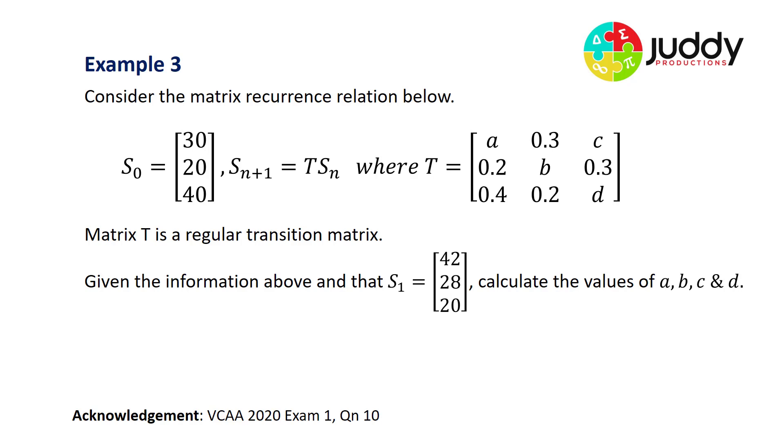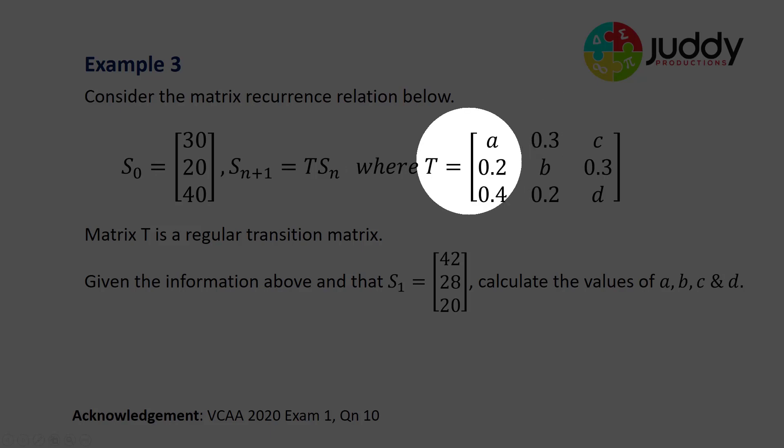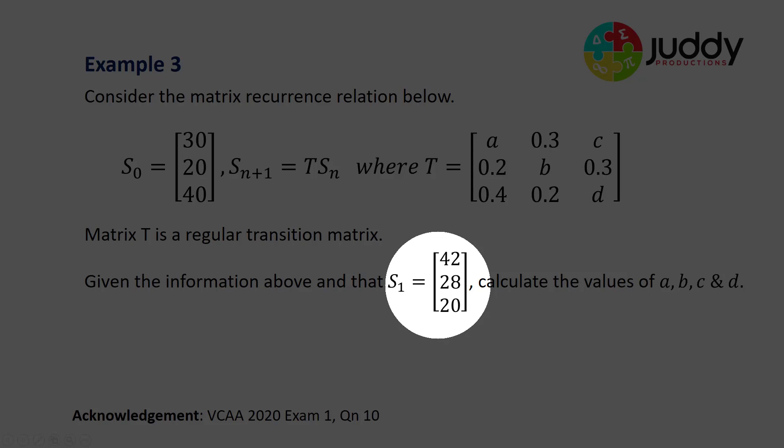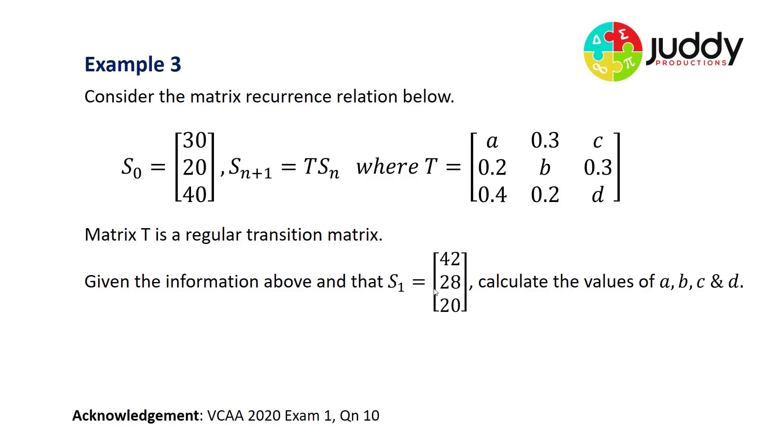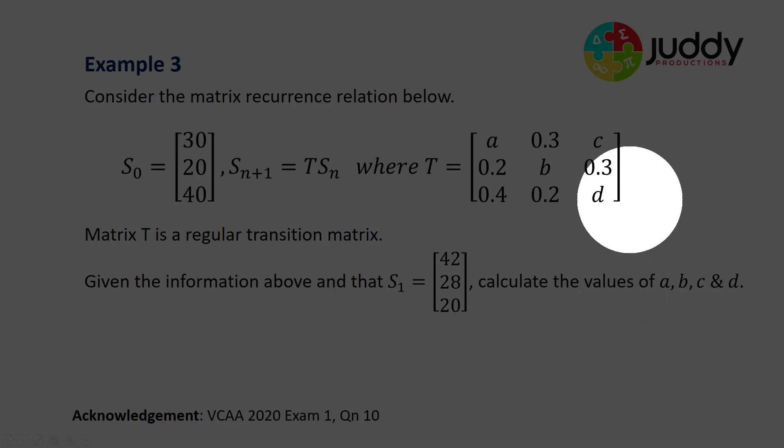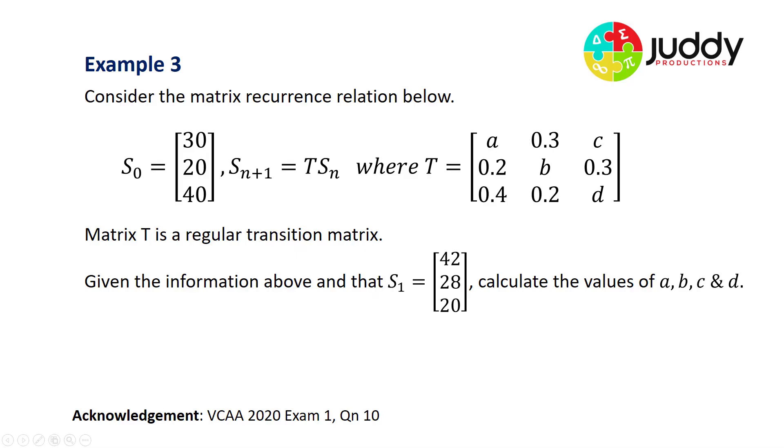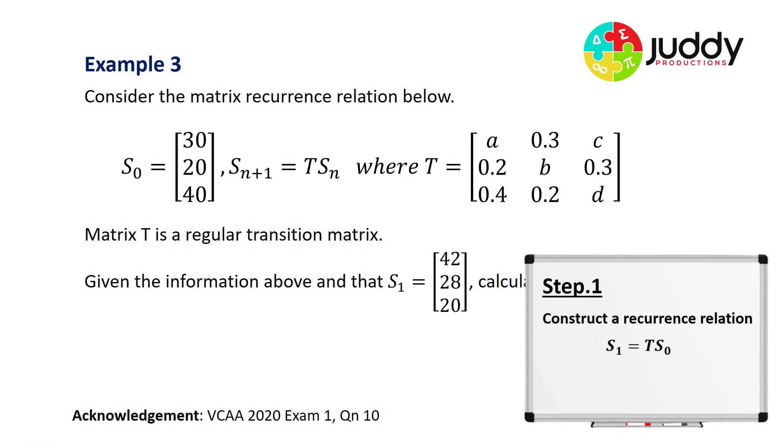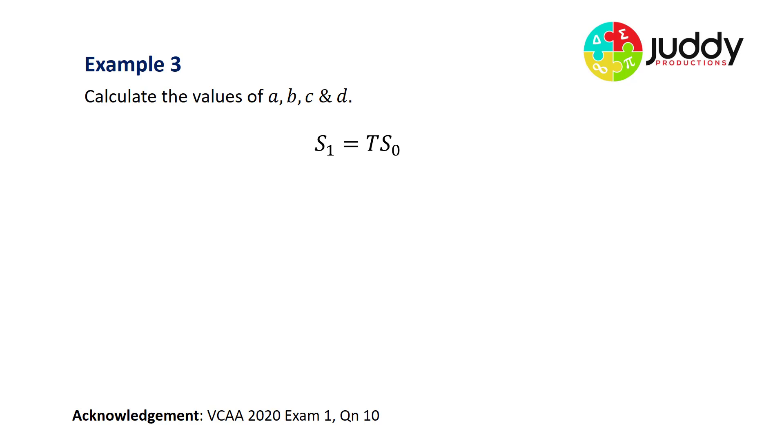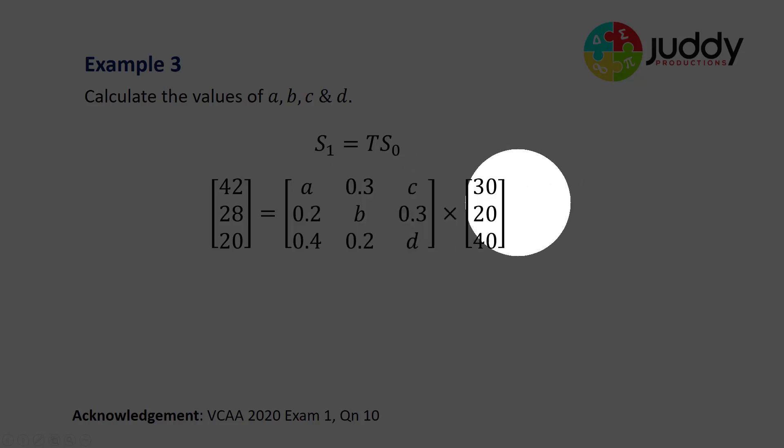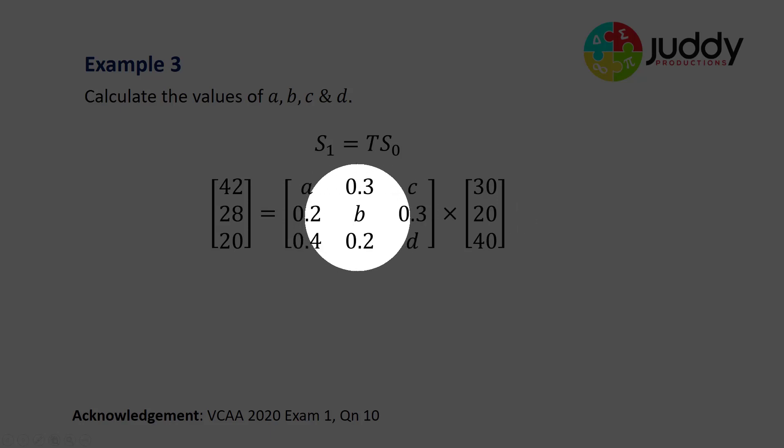Our third and final example: consider the matrix recurrence relation shown below. We're provided with our initial state matrix, our transition matrix, and the S1, the first state matrix as well. The question being asked here is to calculate the values of A, B, C and D, which are located within the transition matrix. First, let's set up the recurrence relation. State one can be calculated by multiplying the initial state by the transition matrix. Here's our transition matrix with the variables we're trying to calculate: A, B, C and D.